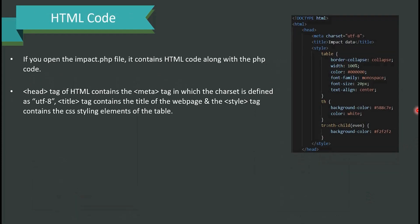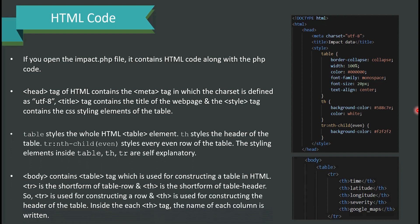The impact.php file contains HTML code along with PHP code. The head tag contains a meta tag defining the charset as UTF-8, a title tag with the webpage title, and a style tag with table styling information. The 'table' selector styles the entire HTML table element, '.th' styles the table header, and 'tr:nth-child(even)' styles every even row. The body contains a table tag; tr (table row) is used for constructing rows and th (table header) is used for column headers.